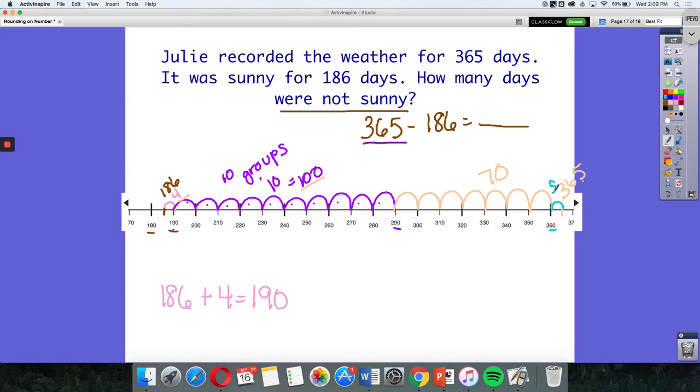So if I take all of my jumps that I did on my number line and I'm going to put them in order from greatest to least 100. Here's my 70 and I'm checking them off to make sure I get them all plus my hop of five at the end and my hop of four at the beginning. That's going to equal 170 and these two equal nine. So 179 days that were not sunny.